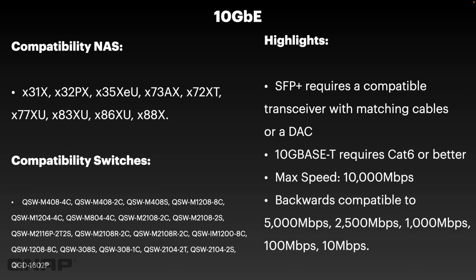Now we'll move into 10 gig. Eagle-eyed viewers may have noticed I've skipped the 5 gig standard. Whilst 5 gig is out there and we are compatible with it, we don't make any NAS with 5 gig embedded. Everything that works at 5 gig basically comes with a 10 gig port. The copper variety of 10 gig — 10GBase-T, which uses the RJ45 socket — can work at 5 gig and 2.5 gig as well, whereas SFP+ connections are either 1 gig or 10 gig only.